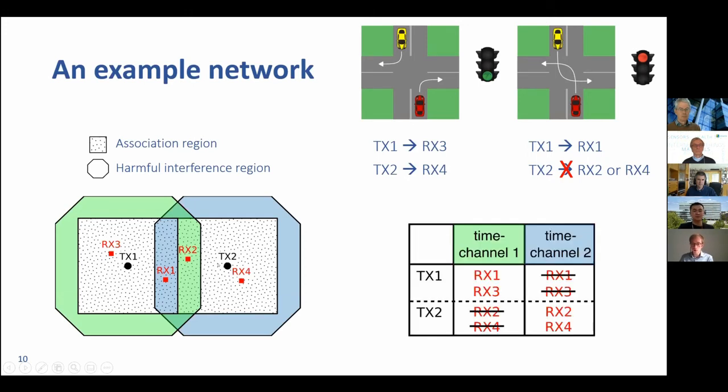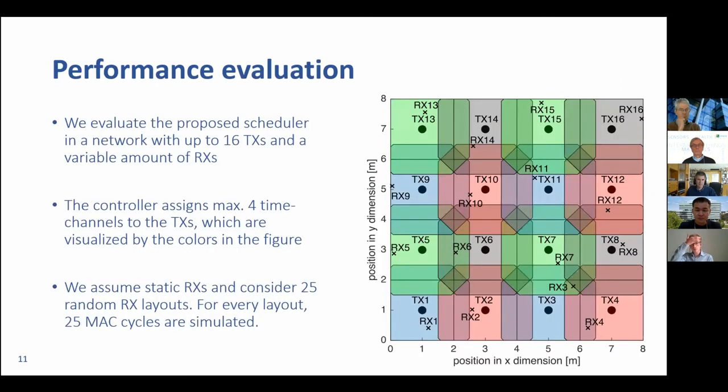This leads to the following table, which is constructed by the controller. These are the rules from the controller. It says that transmitter one can only send within its time channel, but not outside. Similar for transmitter two, only in its time channel. We have to say that further optimization is possible here. For example, transmitter one is actually allowed to serve receiver three, located here, as long as transmitter two is serving receiver four. So actually also outside their time channel, they are allowed to transmit. This is also implemented in our algorithm.